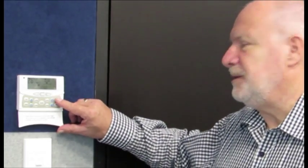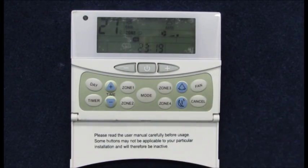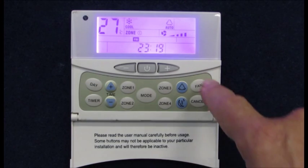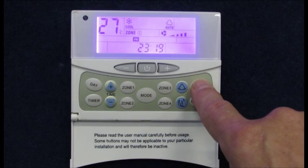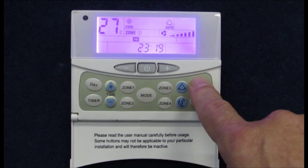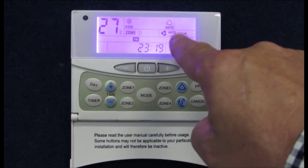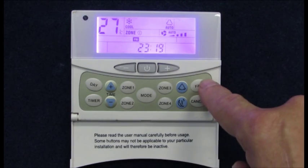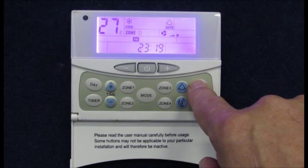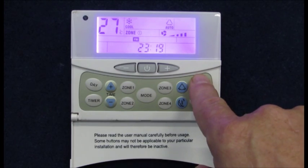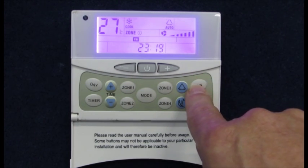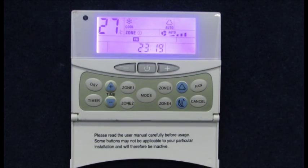There are four options of fan speed that can be selected. Use the fan button to select between auto, high, medium, or low fan speeds. If high, medium, or low are selected, the fan will only run at that speed selected. Selecting auto however allows the controller to select the most suitable fan speed to maintain the set temperature. The closer to the set temperature, the lower the fan speed.